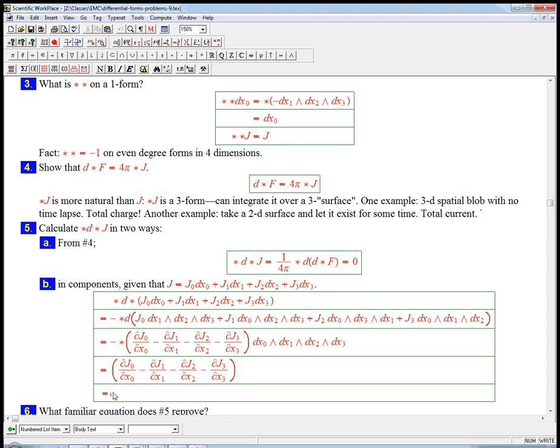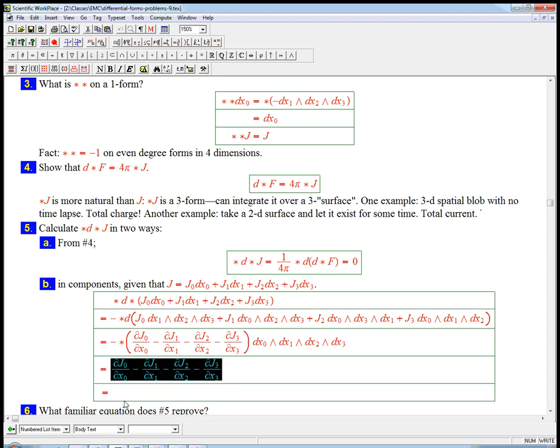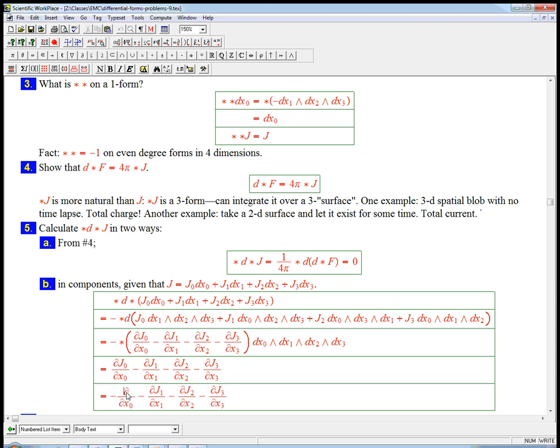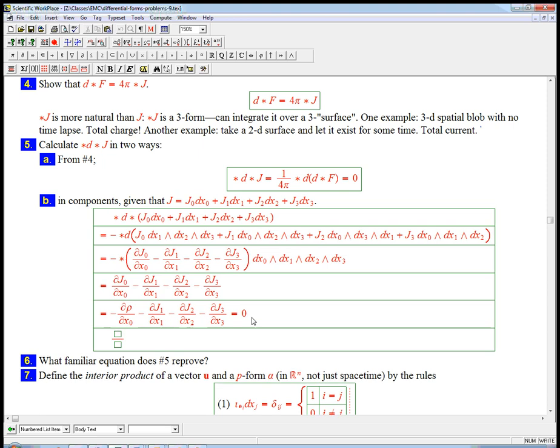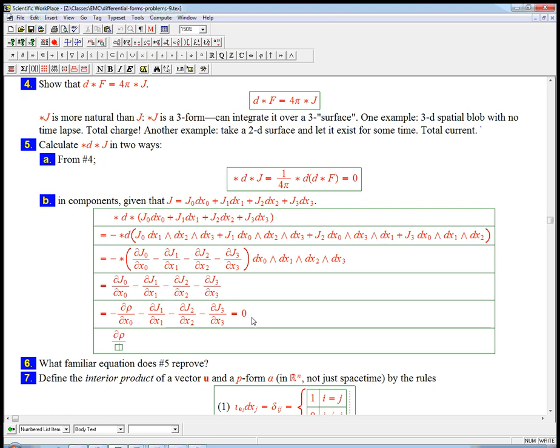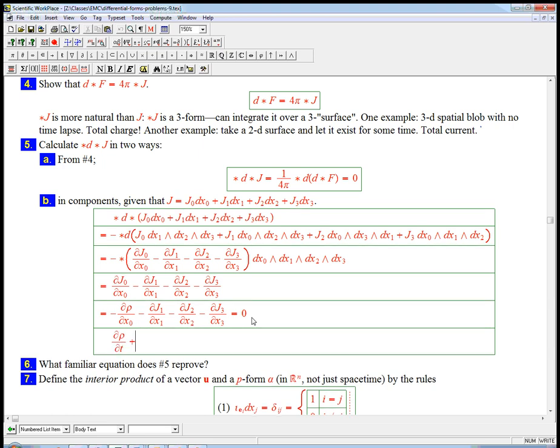Now remember what J naught was. Our identification of that was that was equal to minus, and here a minus sign, this other minus sign kind of saves us, D rho. And then the J1, J2, J3 really were the components of the vector, the current density vector. And so this was supposed to be 0. Remember, just from D squared equals 0, this absolutely fundamental fact about differential forms, it's saying that this quantity is 0. This is almost a divergence, but we just have to be careful. It really is minus the divergence, to be honest.